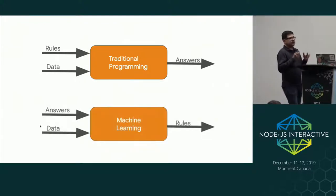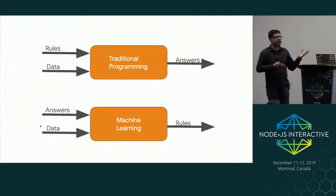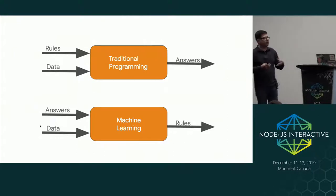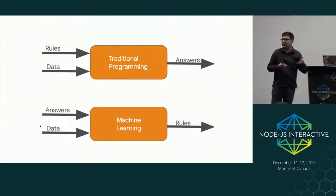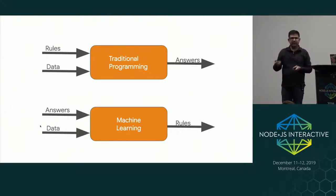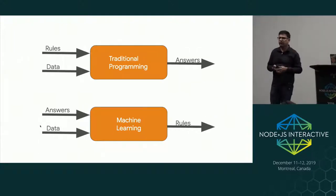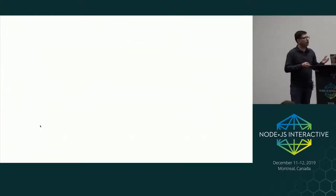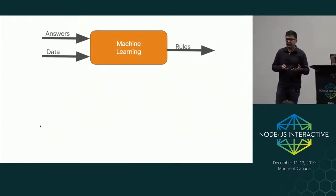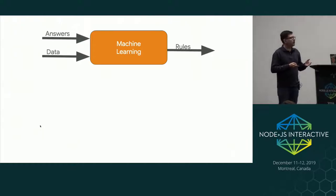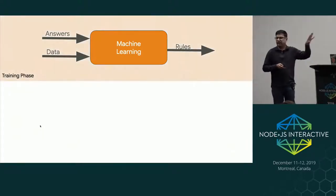In machine learning, it turns this whole concept on its head. What if I had some examples where I already know the answers, and what if I can feed a lot of these examples — we call this training data — along with answers into a computer program or a model? This model has the property that it can learn from these examples so it can come up with what the rules are. In practice, you collect a lot of training data, have it labeled with human-generated labels, feed it into a machine learning model, and out come these rules or a trained model. This is the training phase.